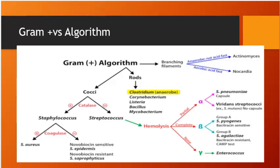One important point: Mycobacteria have high lipid layers in their cell walls, so they don't stain well with gram staining. You need a special stain called acid-fast or Ziehl-Neelsen staining.